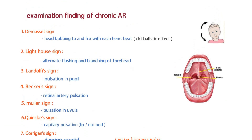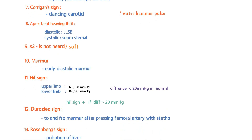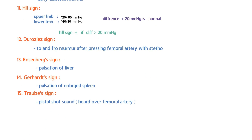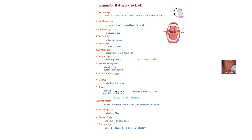In summary, the examination findings of severe aortic regurgitation include: De Musset's sign, Lighthouse sign, Landolfi's sign, Becker's sign, Müller's sign, Quincke's sign, Corrigan's sign (dancing carotid), apex beat with heaving thrill, absent or soft S2, early diastolic murmur, Hill's sign, Duroziez's sign, Rosenberg's sign, Gerhardt's sign, and Traube's sign.